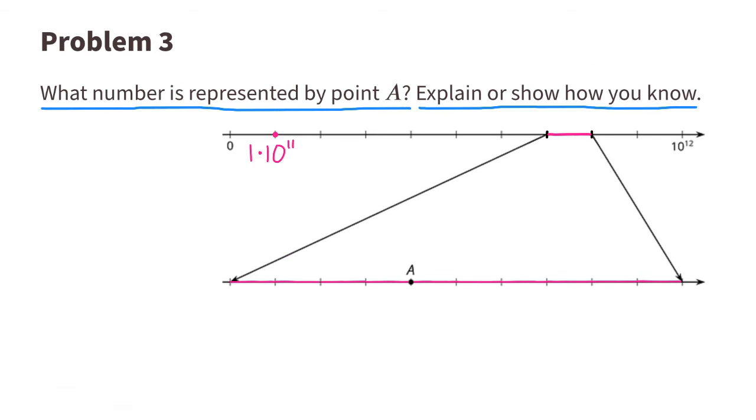Here's 1 times 10 to the 11th power. 2 times 10 to the 11th power. 3 times 10 to the 11th power. 4 times 10 to the 11th power. 5 times 10 to the 11th power. 6 times 10 to the 11th power. And now we've gotten to the zoomed in line.